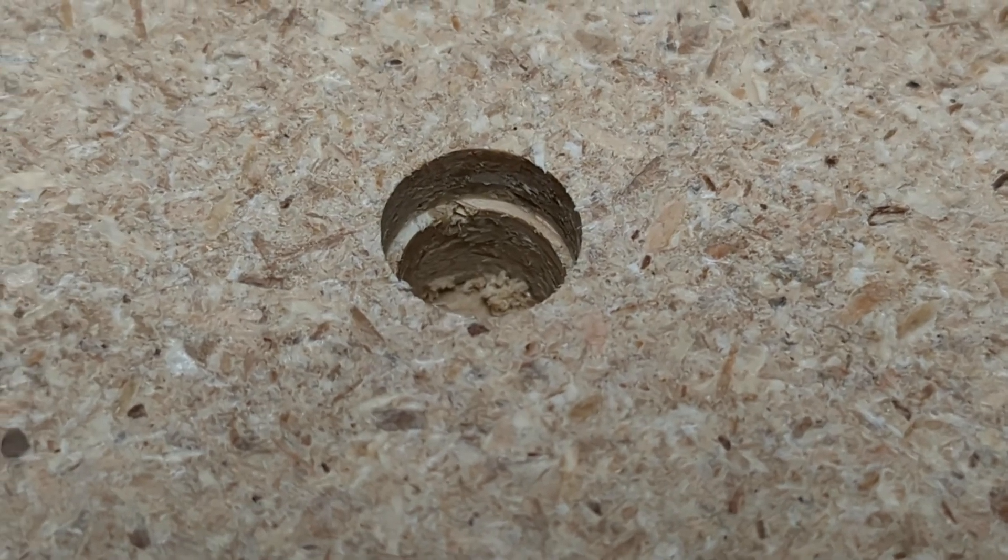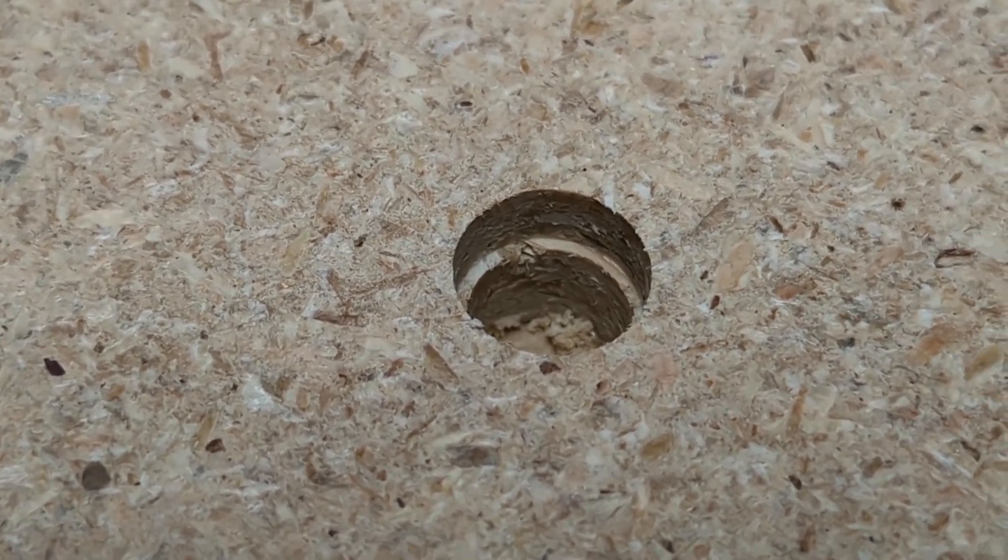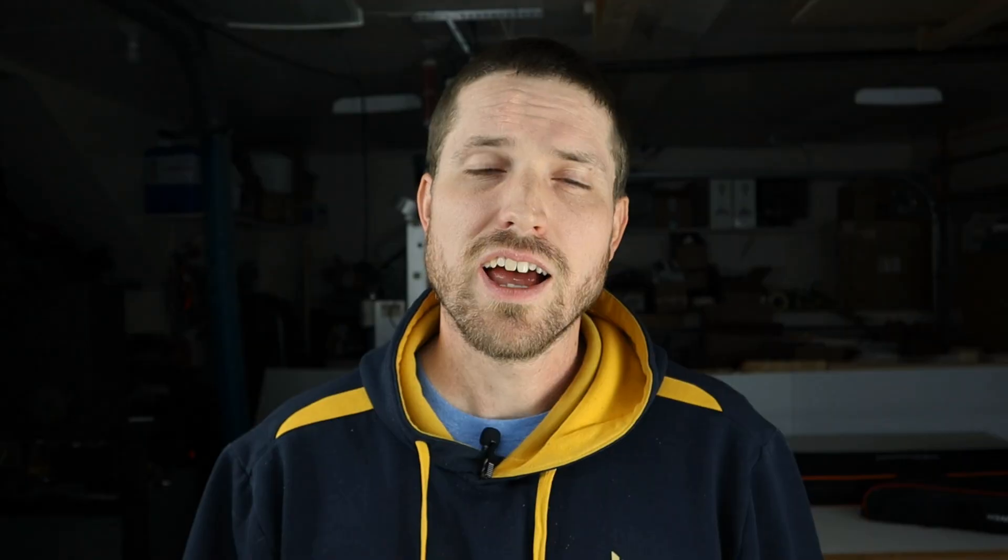When I probed the particle board, I could be hitting a slight void or burr in the wood product, which would appear as a misalignment, even if the overall holes were aligned perfectly. I am still very happy with the results, and it was interesting to learn how to write G-code macros to solve this alignment problem.